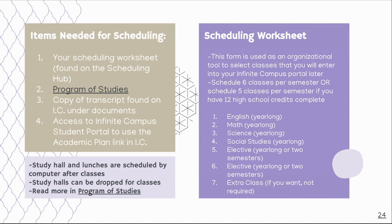Those that are freshmen and sophomores will be signing up for six classes a semester. If you don't sign up for enough, unfortunately we will have to pick classes for you — it's a bummer, and we usually pick out the wrong ones. Make sure you're signing up for enough classes because that ensures you're going to graduate on time, and if you're an athlete, it also ensures eligibility.